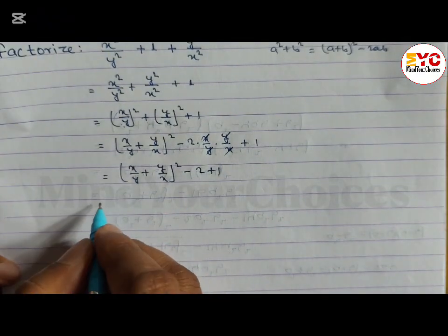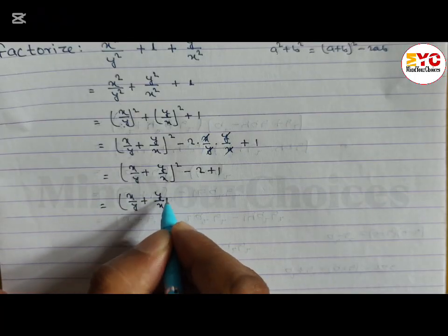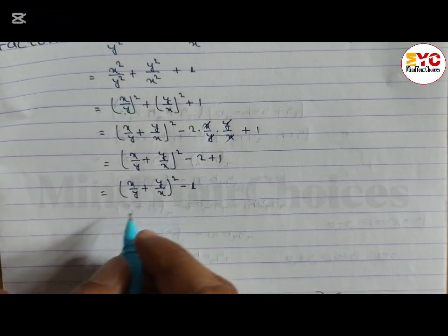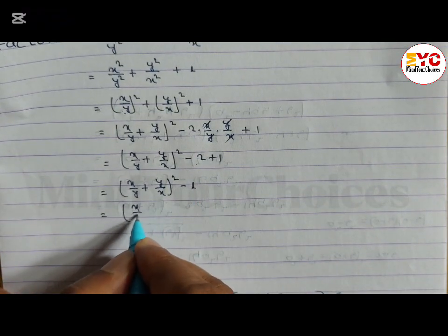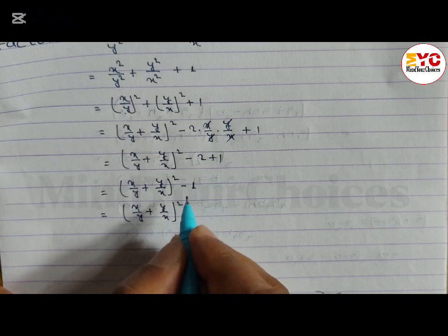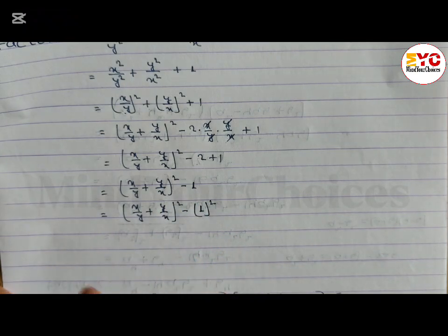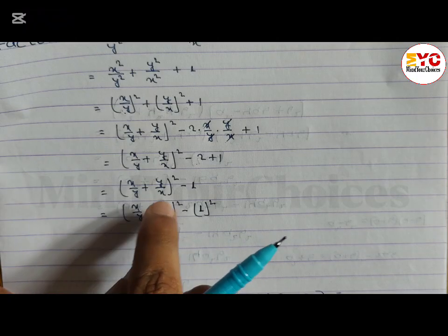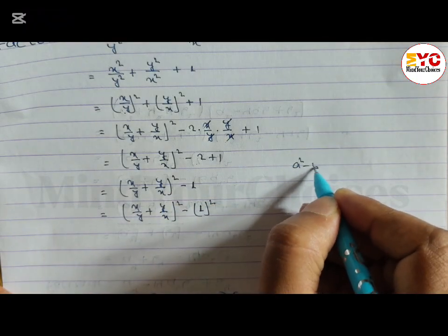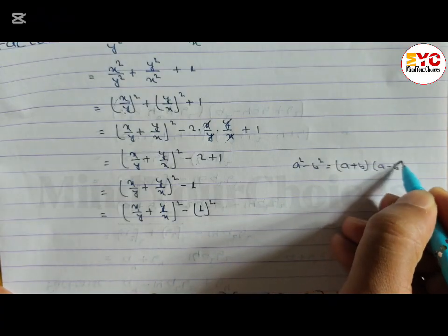So we can write x by y plus y by x whole square minus 2 plus 1, which gives us minus 1. So this becomes x by y plus y by x whole square minus 1 squared, since the square root of 1 is 1. You can now see this is in the form of a squared minus b squared.